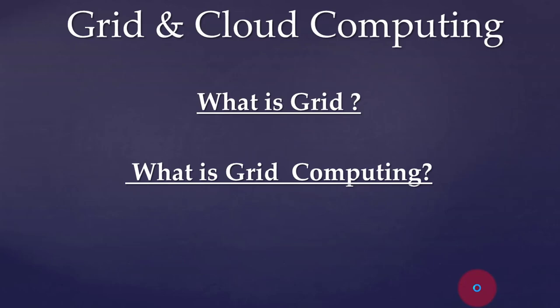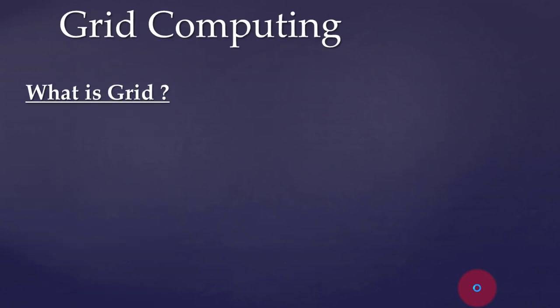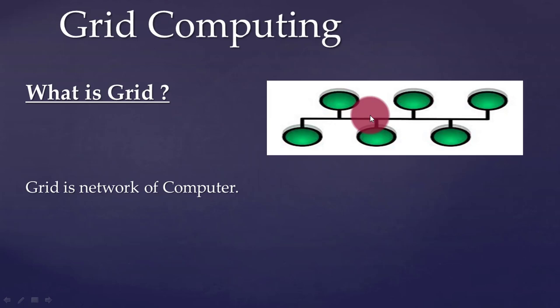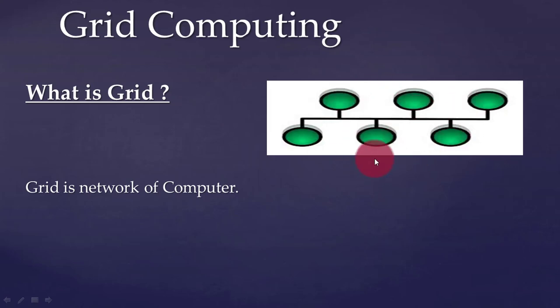Let's first understand what is meant by the grid. Grid is nothing but a network of computers. In the given diagram, nodes or computers — also called workstations — are connected through a communication network. This communication network can be a LAN, MAN, or WAN. It may be homogeneous or heterogeneous. When nodes are connected under the same area network it is called homogeneous; if nodes are under different kinds of communication networks like LAN and MAN, it is called a heterogeneous network.